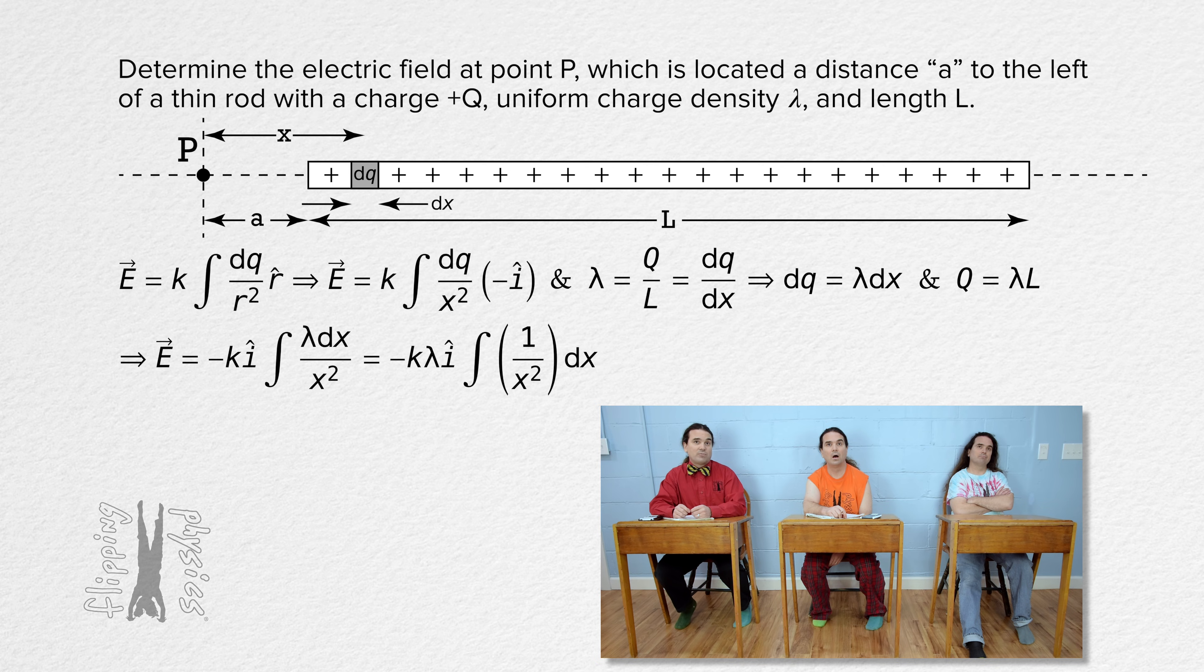The limits on x for the rod are, well, the distance x for the location of dq varies from the left end of the rod to the right end of the rod, so the integral goes from distance a to distance a plus capital L.